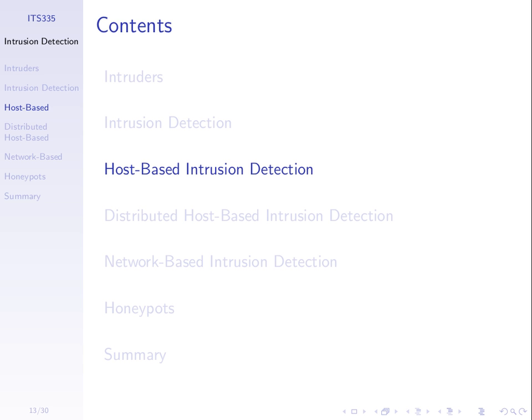Distributed host-based extends that. Say in SIT, we have some software on each of the computers, on each of the hosts. They collect information and send it back to some central server to help determine if there's an intruder — collecting information not just from one computer, but from multiple computers in the network. Both of them are looking at the activities on the computers.